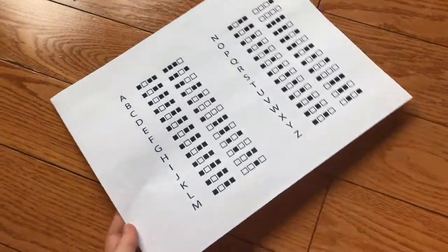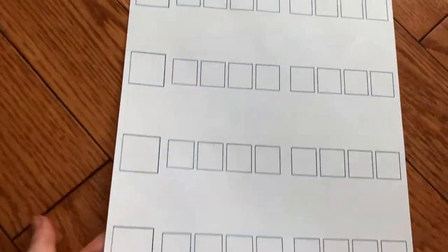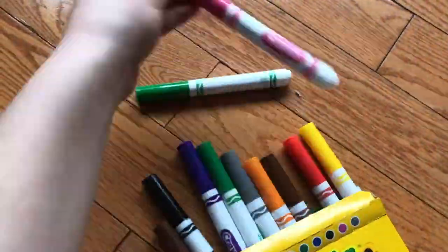For this activity, you will need printouts of a binary code key and a blank template, both of which are linked in the description for you to print out yourself. You will also need beads in two different colors, markers, crayons, or colored pencils,